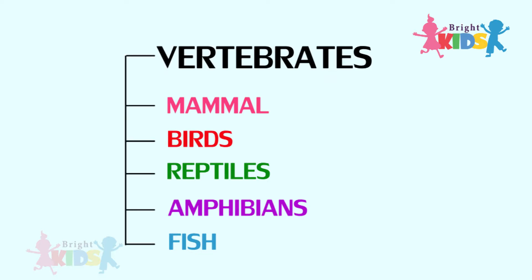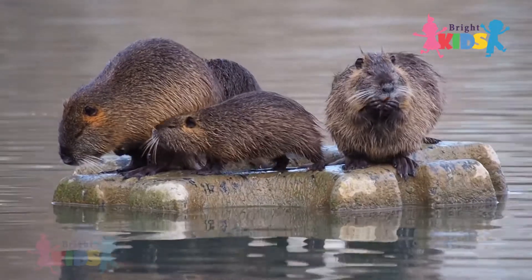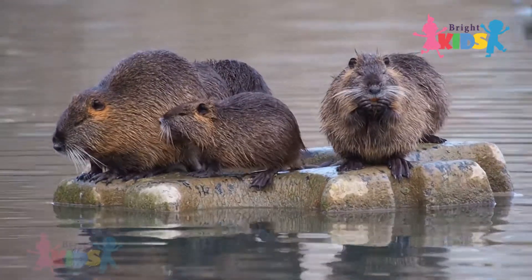Vertebrates can be classified into five categories: mammals, birds, reptiles, amphibians, and fish. Let's talk about mammals today.